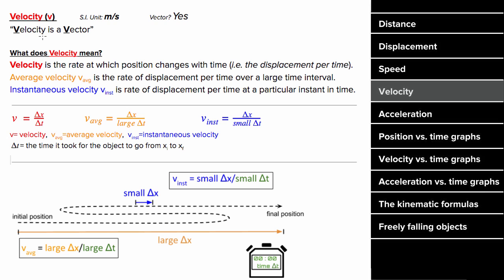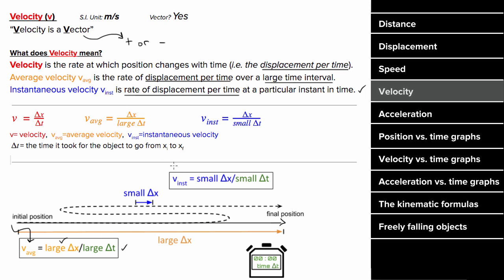What does velocity mean? Velocity is another way to determine how fast something's moving, but this one's a vector, which means velocity can be positive or negative. Velocity is defined to be the displacement per time. You could define the average velocity as the displacement per time over a large time interval, or the instantaneous velocity as the rate of displacement per time at a particular moment in time. The units of velocity are meters per second and it is a vector, meaning it can be negative if the velocity is directed leftward or downward.